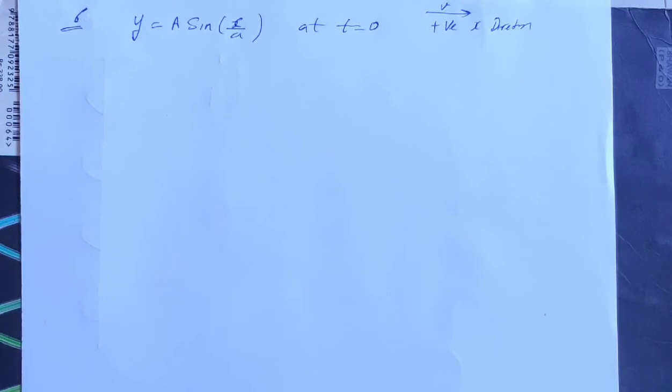What are the dimensions of capital A and small a? Write the equation of wave for general time t if the wave speed is v.